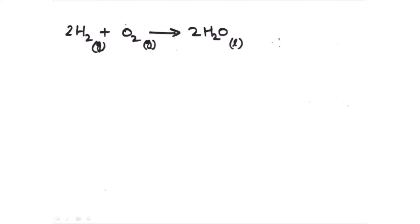The numbers in front of each species are called stoichiometric coefficients. Using these stoichiometric coefficients, we can express the mole relationships. This equation tells us 2 moles of hydrogen react with 1 mole of oxygen to give 2 moles of water.